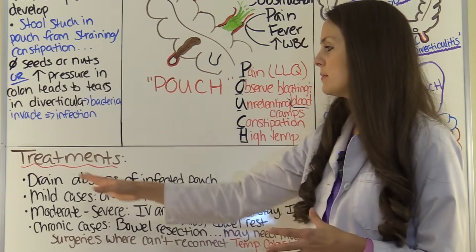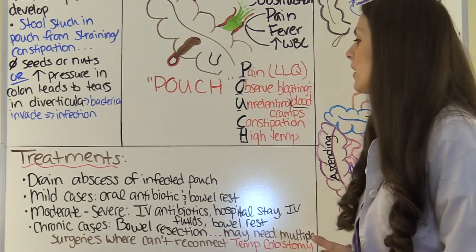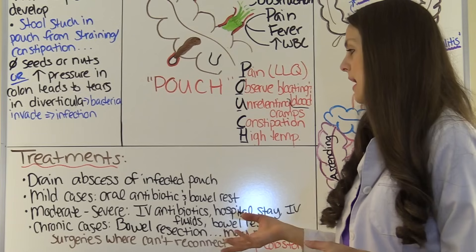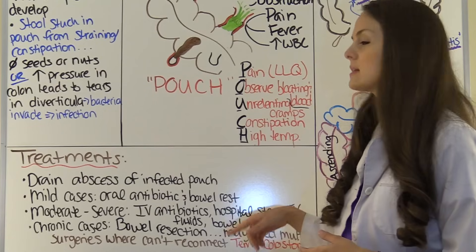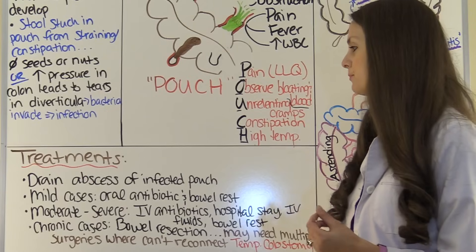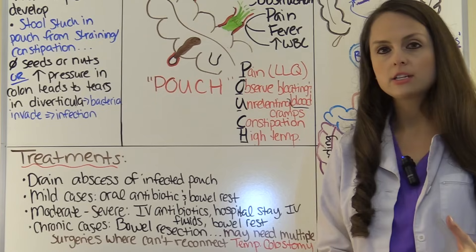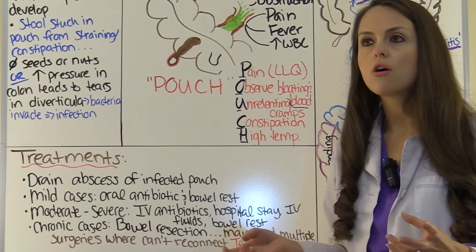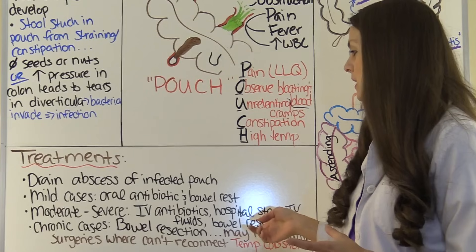Now treatments — as a nurse, you want to be familiar with these. They can drain the abscess of that infected pouch. For mild cases, they can prescribe oral antibiotics, bowel rest, and then slowly reintroduce certain foods. Moderate to severe cases usually require hospitalization where they'll be getting IV antibiotics, IV fluids, and maybe fat emulsion solutions like TPN because they'll be NPO for a while, with complete bowel rest.